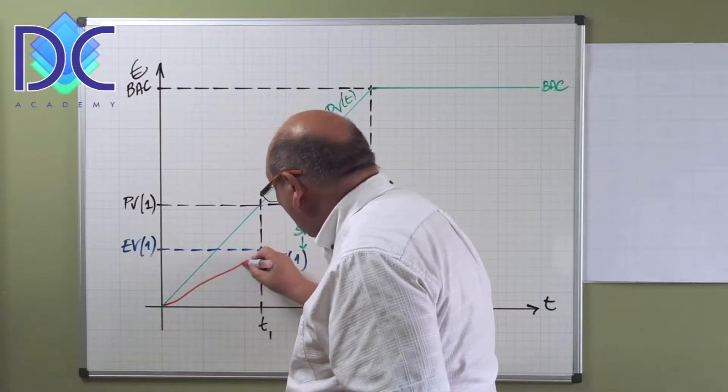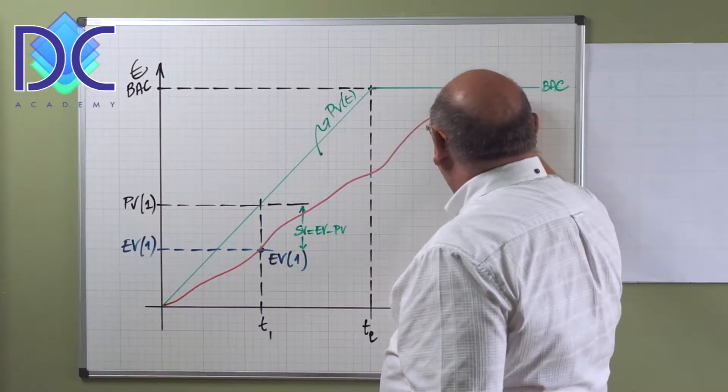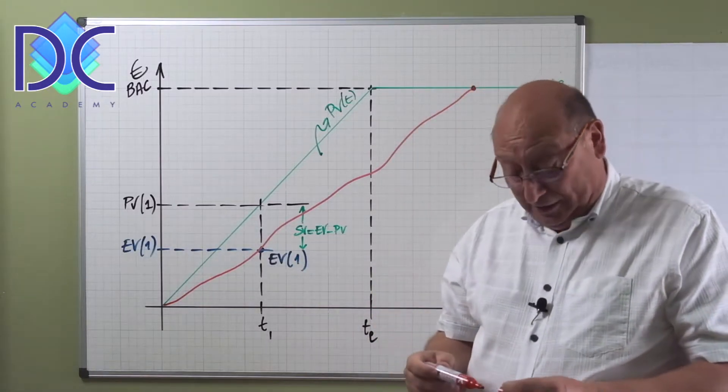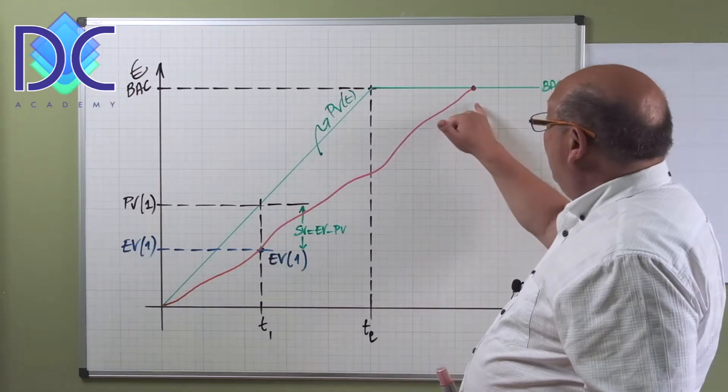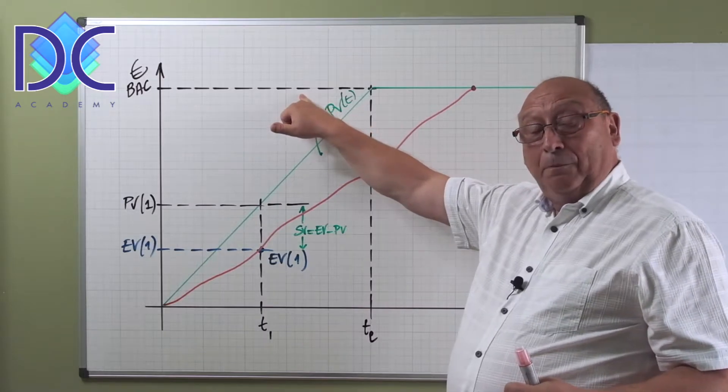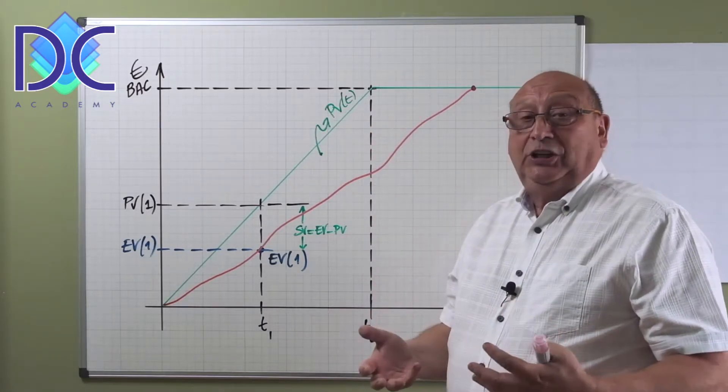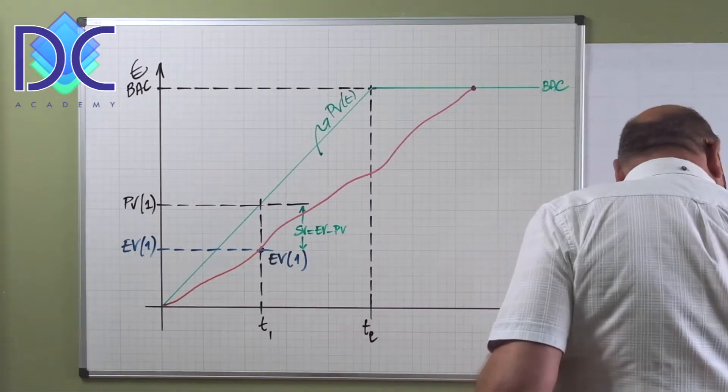But now let's look at a possible way that the earned value evolved over the project. I'm just taking a line, I'm not drawing any curves. So it could be something like this, and basically we arrive here. This is the end of the project.